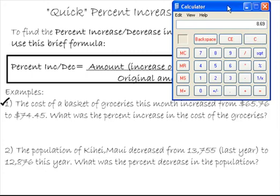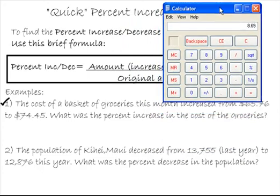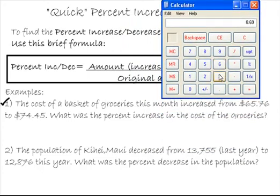And using the formula, what we want to do here is divide that by the original amount. That's the amount that we started with, which was $65.76. So divided by 65.76 equals,